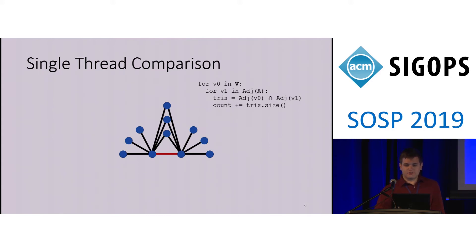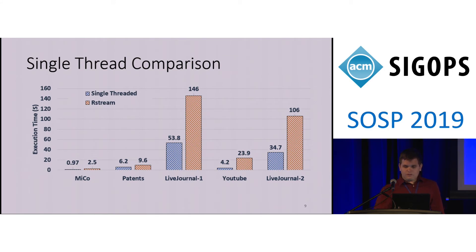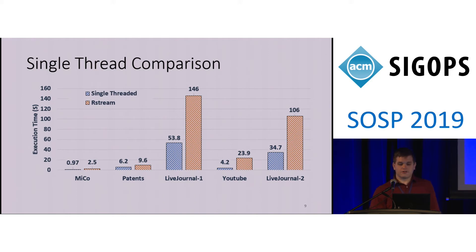Let's take a look at the performance of these systems compared to a single-threaded implementation as a benchmark. Consider two vertices which are connected, each of which has some neighbors. Those neighbor lists are sets, and the intersection of those sets contains the vertices which form a triangle incident on the red edge. Unfortunately, this shows that the single-threaded implementation can outperform Rstream on triangle counting, and Arabesque takes too long to even be practical. A key reason the costs are so high is that the intermediate data tables these systems generate and store can become huge, and such a large working set is hard to get good performance on.